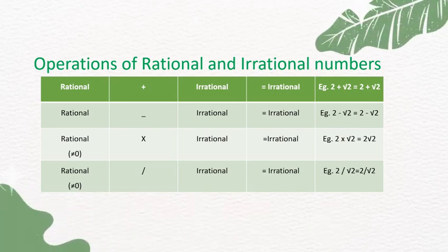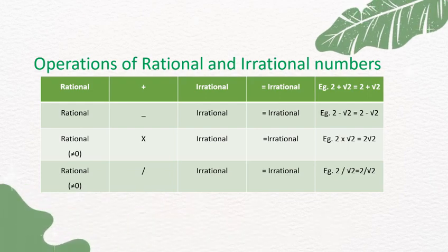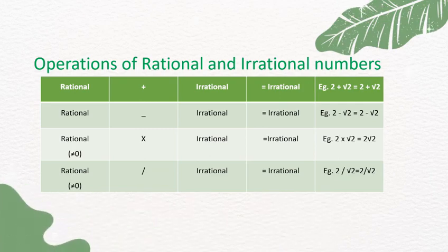A rational number minus an irrational number equals an irrational number. For example, 2 is rational and √2 is irrational; 2 − √2 equals 2 − √2, which is an irrational number.